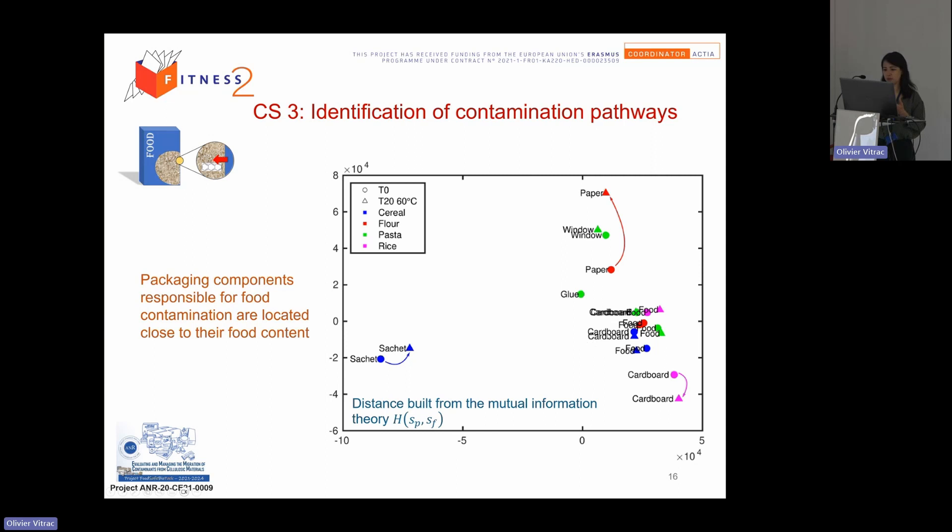And normally we have the packaging component responsive of the food contamination allocated close to the food content. So here, for example, we have the cardboard of cereal. It's close to the cereal foods, the food constituents. So we expect that the main contribution of the contamination of food goes by cardboard. It's the same thing with the pasta. We have the food next to the cardboard signal.